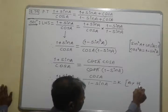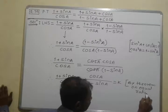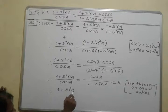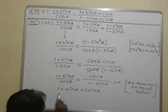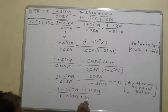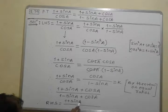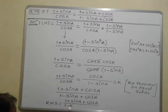By the theorem on equal ratios, we can add numerators and add denominators. Adding the numerators gives (1 + sinA + cosA), and adding the denominators gives (1 − sinA + cosA). This equals our RHS, that is (1 + sinA + cosA) / (1 − sinA + cosA).